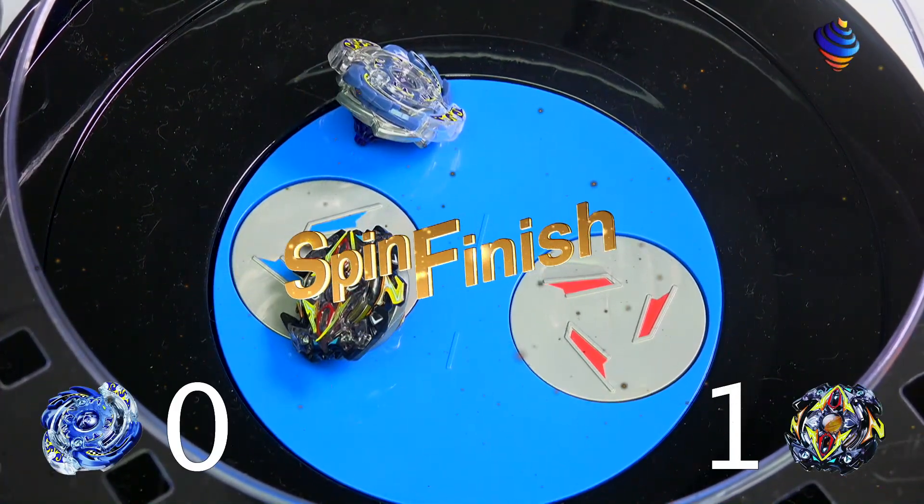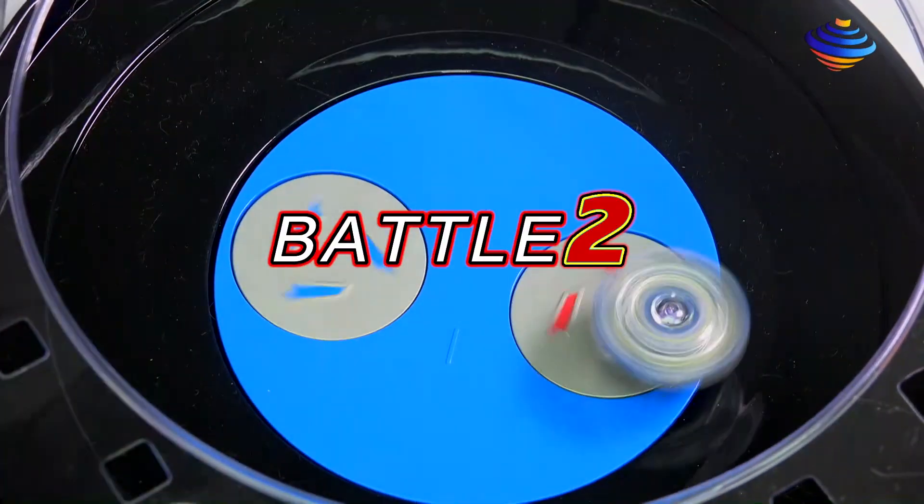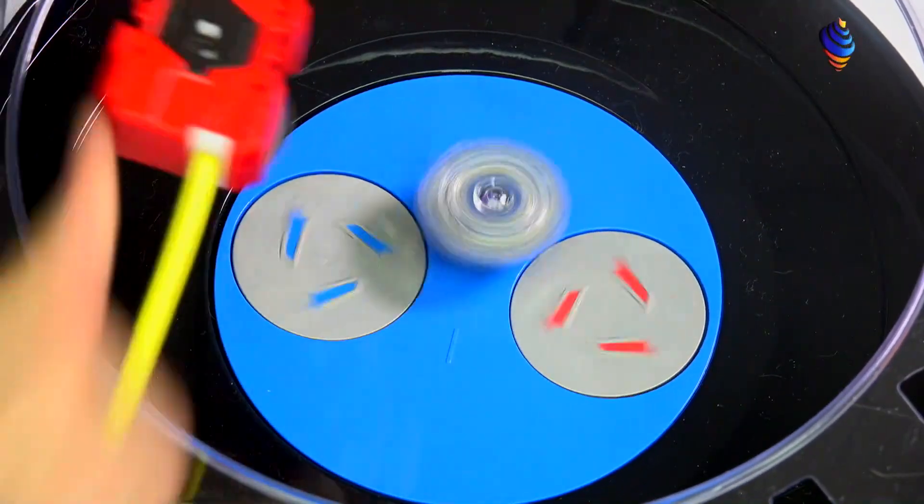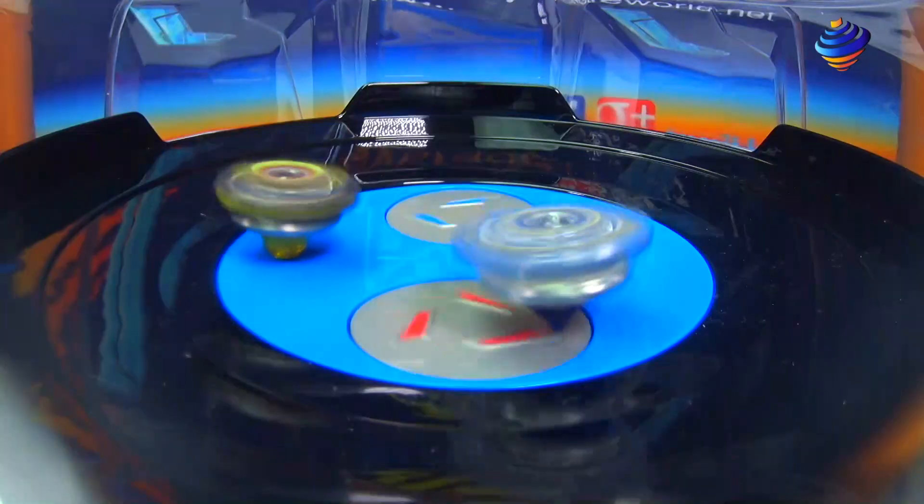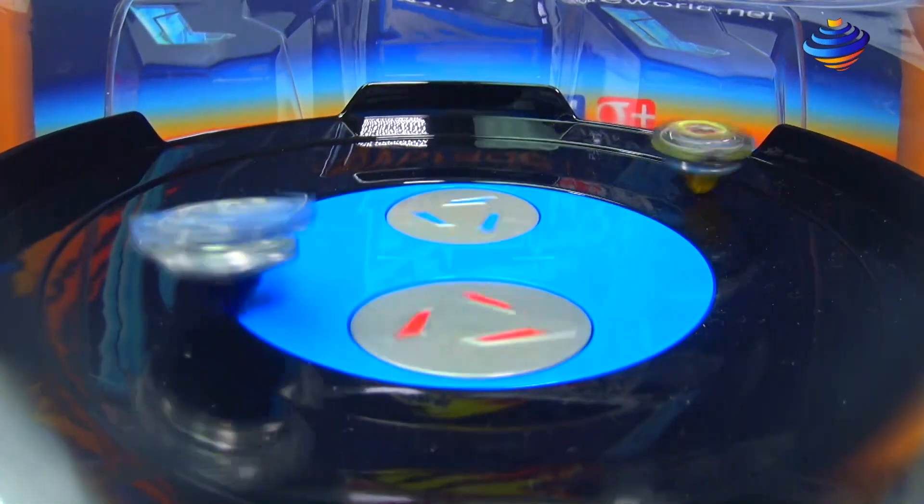Score is 0-1 with a spin finish. Battle 2, 3-2-1, go shoot. So we got Fang, Zeus, 1 for battle 2. Will it be Fang or will it be Zeus?